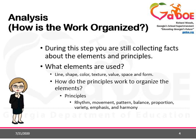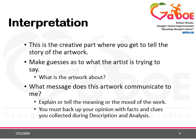Step two is analysis — this is how the work is organized. In this step you're still collecting facts about the elements and principles. What elements are used? Line, shape, color, texture, value, space, and form. How do the principles work to organize the elements? The principles are rhythm, movement, pattern, balance, proportion, variety, emphasis, and harmony. You're collecting facts such as: do you see repeated lines creating rhythm? Is the color scheme in primary colors only? That's the sort of thing you're looking for in this step.